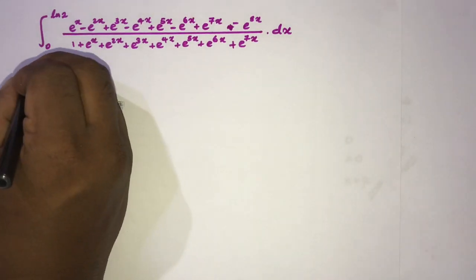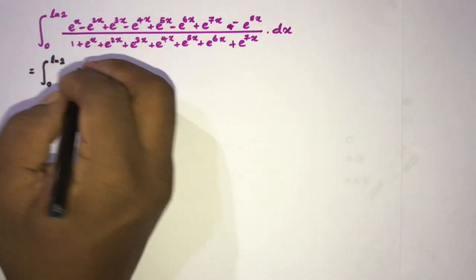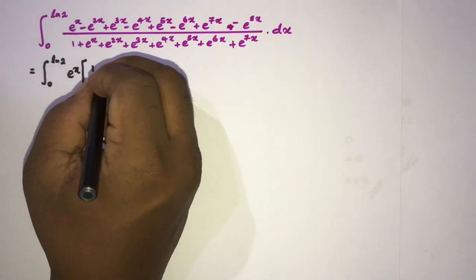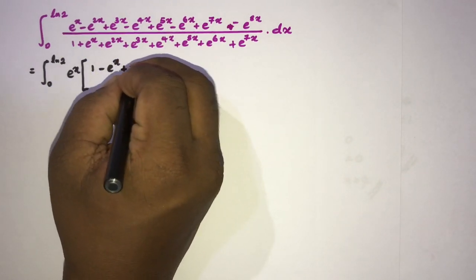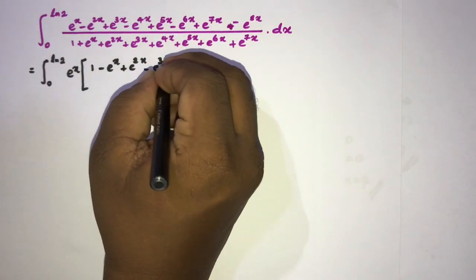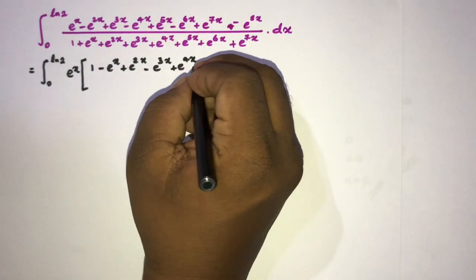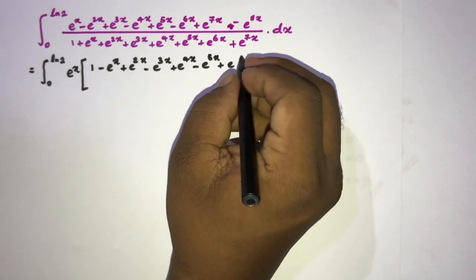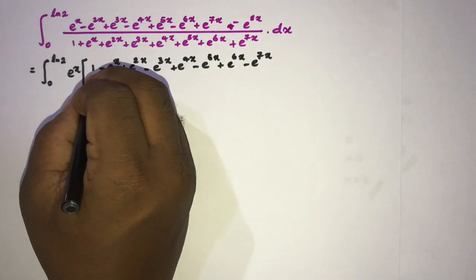I am going to take e to the x as a common factor in the numerator. So we get the integral from 0 to natural log of 2 of e to the x times the quantity: 1 minus e to the 2x, giving us e to the x plus e to the 2x minus e to the 3x plus e to the 4x minus e to the 5x plus e to the 6x minus e to the 7x, over the denominator.